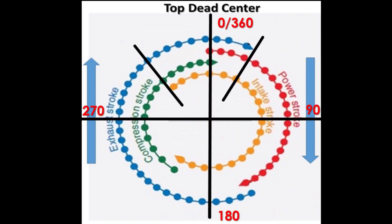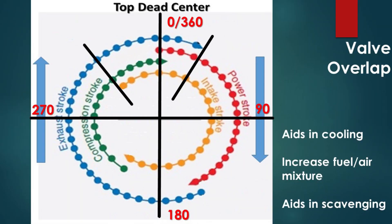Therefore, at a particular instant, both valves are open at the same time — which is the end of the exhaust stroke, shown in blue on the valve timing chart, and the beginning process of the intake stroke, shown in yellow on the valve timing chart. This timing is called valve overlap.